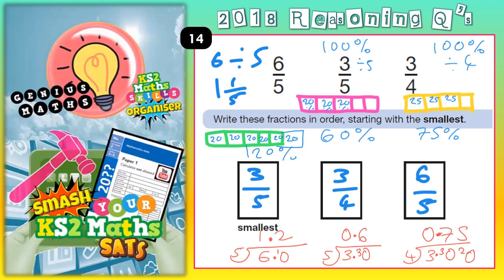Now again, you would still actually get the same answer. The smallest one of these decimals is 0.6, which came from 3 fifths. Therefore, 3 fifths is the smallest. 0.75 came from 3 quarters, which is why that's the next smallest. And 1.2 is the biggest decimal, which came from 6 fifths, which is why that's the biggest.